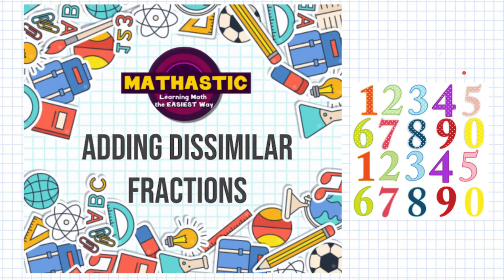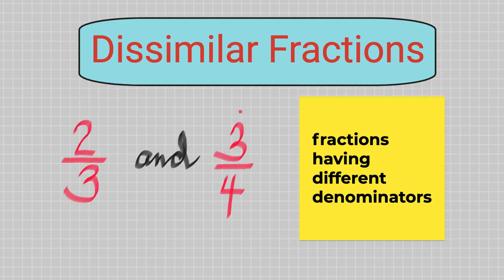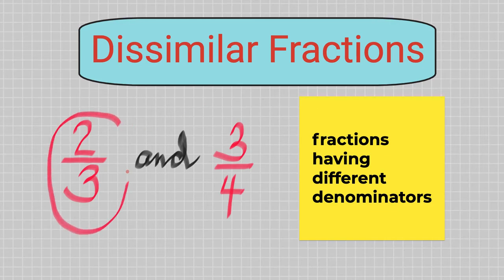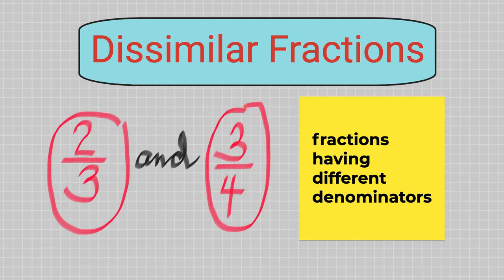Good day everyone. Today we will be discussing all about adding dissimilar fractions. But before that, let's try to identify what we mean by dissimilar fractions. When we say dissimilar fractions, we mean fractions having different denominators. For example, two-thirds and three-fourths are dissimilar fractions simply because the denominator here is three and the denominator here is four — they are not the same. Whenever the denominators are different, those fractions are considered dissimilar.